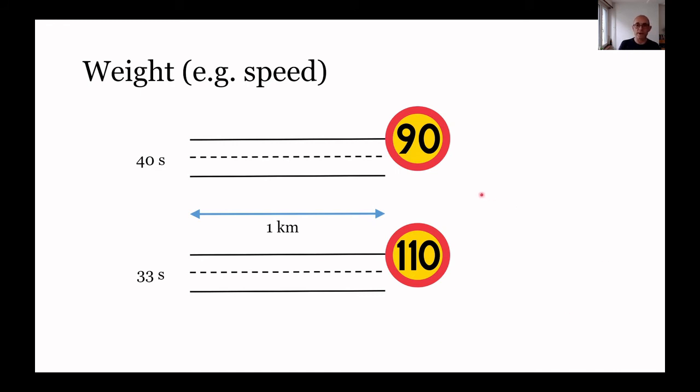So for example, when we have a maximum speed limit, here we have one kilometer. If our maximum speed limit is 90 kilometers an hour, then it will take 40 seconds to travel that distance. So our cost we could say is 40 seconds. Whereas if our upper speed limit is 110 kilometers an hour, we can travel the same distance in only 33 seconds. So our cost is seven seconds less on this same stretch of road, the same distance at least. But because the weighting is different because of our speed limit, it costs us less to travel along this road.